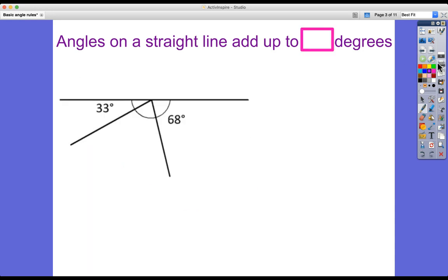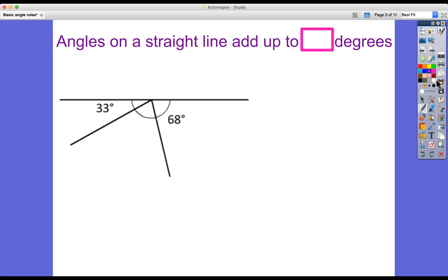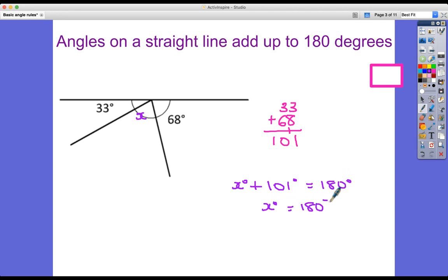Next one. Angles on a straight line now. Except this time we've got three angles. So what we're going to have to do is to add up first of all the total of these two angles here. So 33 plus 68, let's do it without a calculator. So we've got 101. We know that they add up to 180 degrees. So if they add up to 180 degrees, then x plus that 101 degrees equals 180 degrees. And so x degrees must be 180 degrees subtract 101 degrees or 79 degrees.